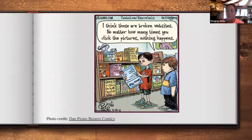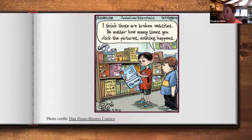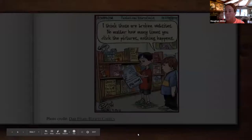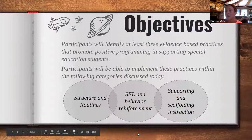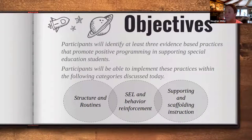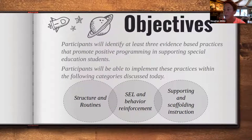It's also super important to remember the impact that this has had and will continue to have on our students. Learning and school instruction has been changed not only for us as educators and parents, but also for our students. No matter what the future of schooling looks like, we're going to need to continue to adjust. Today's objectives: it is my goal that each of you will walk away with at least three evidence-based practices that will positively impact and support our special education students.